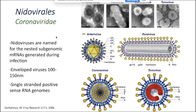Coronaviruses are members of the order Nidoviruses. Nidoviruses are named for the nested subgenomic mRNAs—messenger RNAs generated during infection. They are enveloped viruses of about 100 to 150 nanometers. They all have single-stranded positive-sense RNA genomes, which means that their RNA genomes can actually serve as messenger RNAs. Here are coronaviruses and the other members of this Nidovirus superfamily.